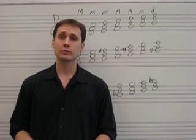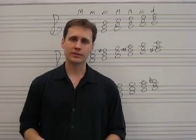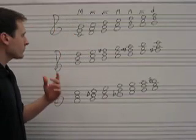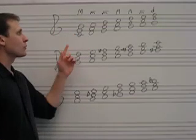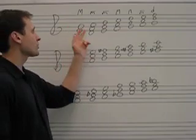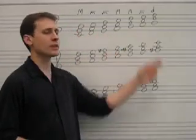So we're going to use something called Roman numeral analysis. And the way it works is like this. As we talked about before, there is a pattern to the diatonic triads: major, minor, minor, major, major, minor, diminished.